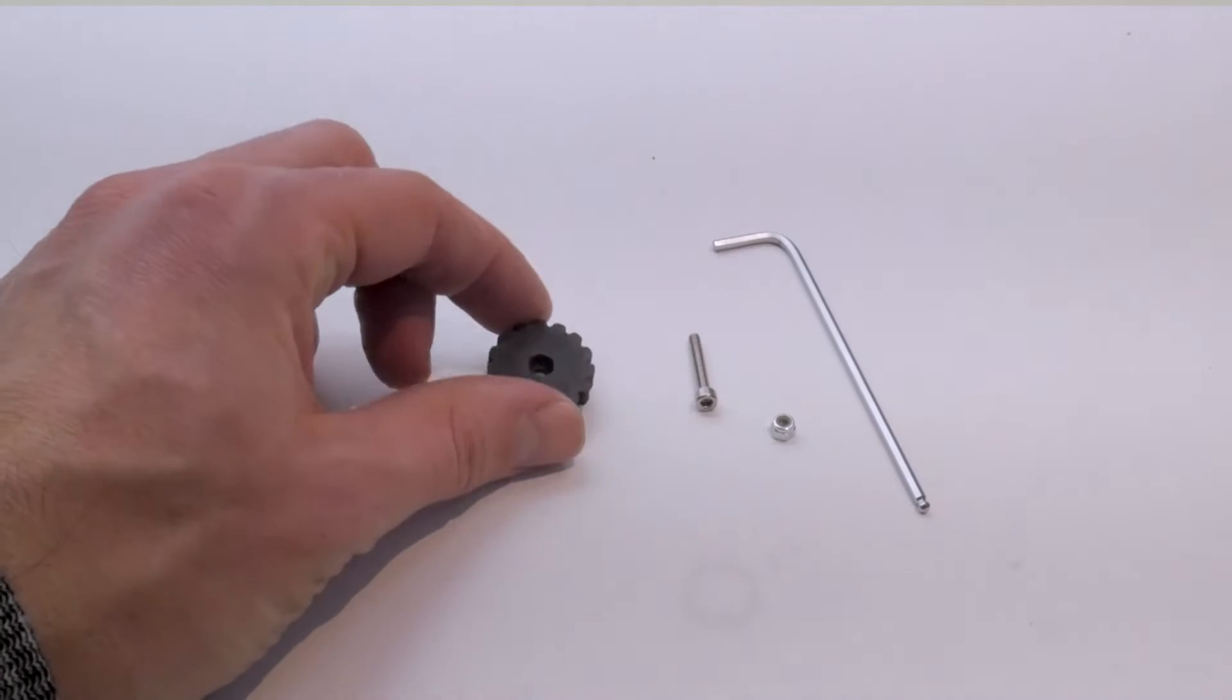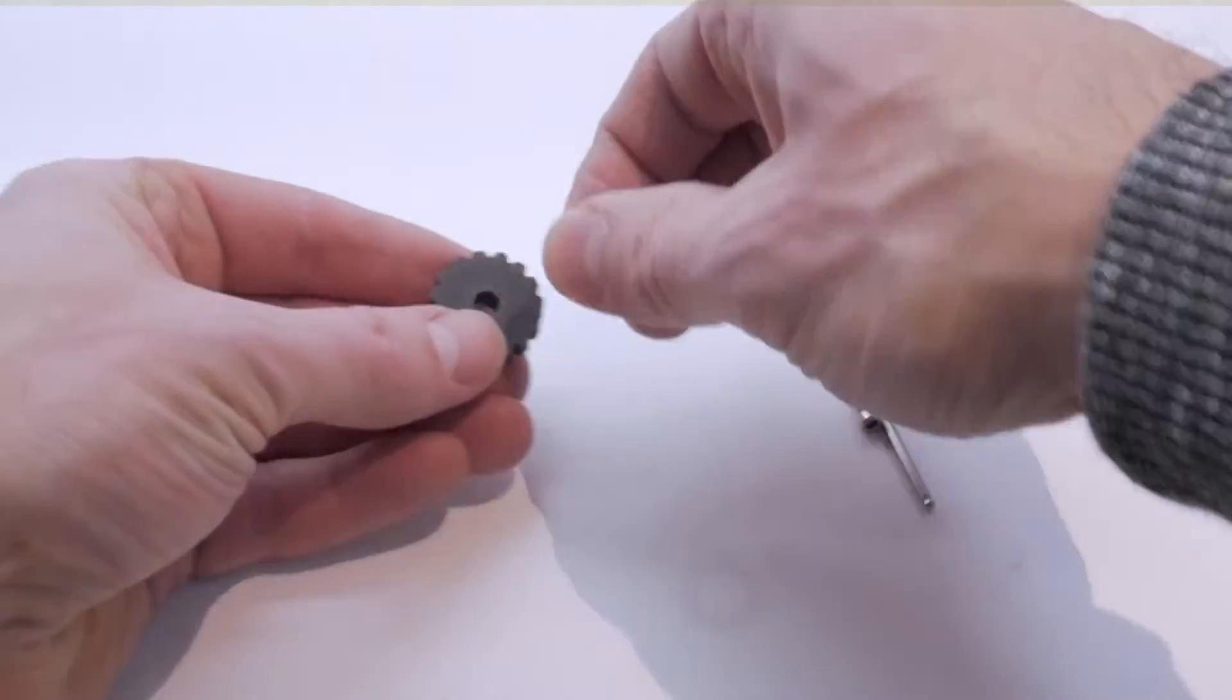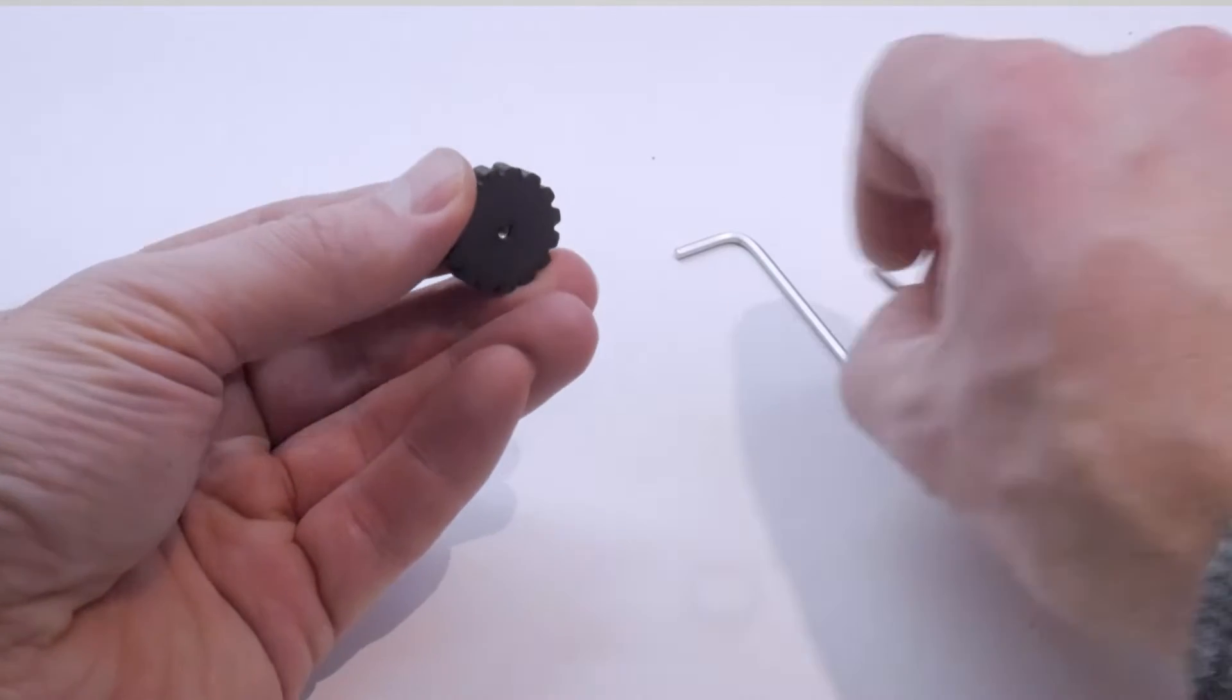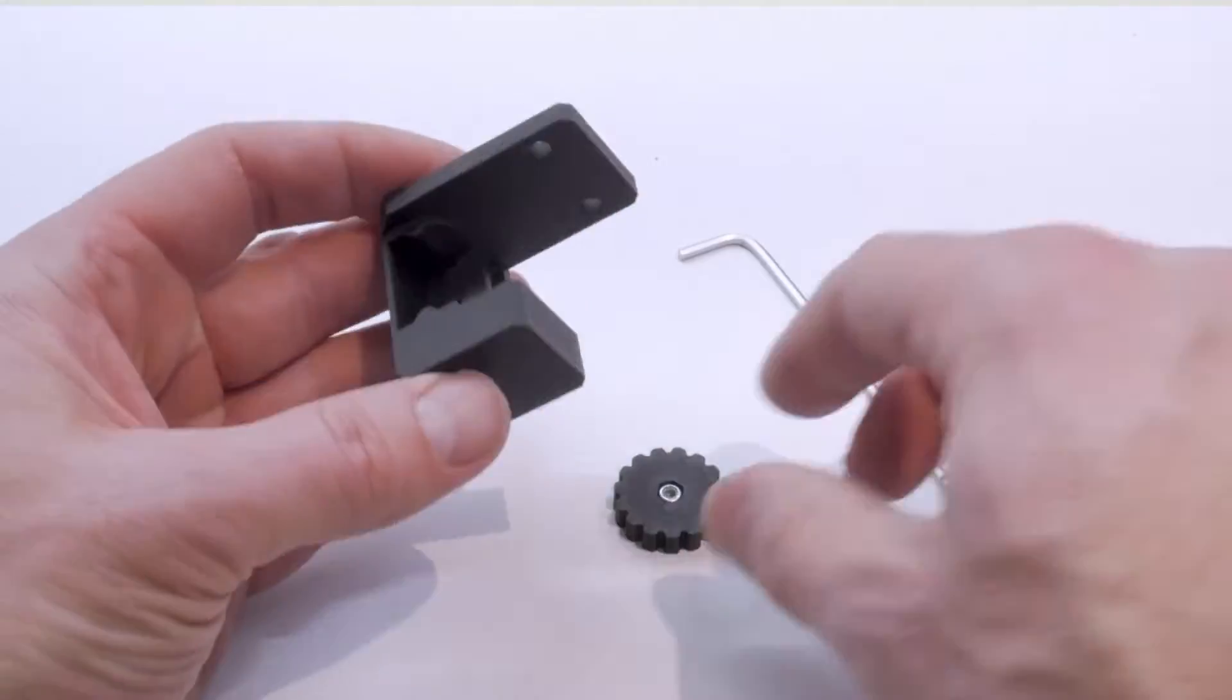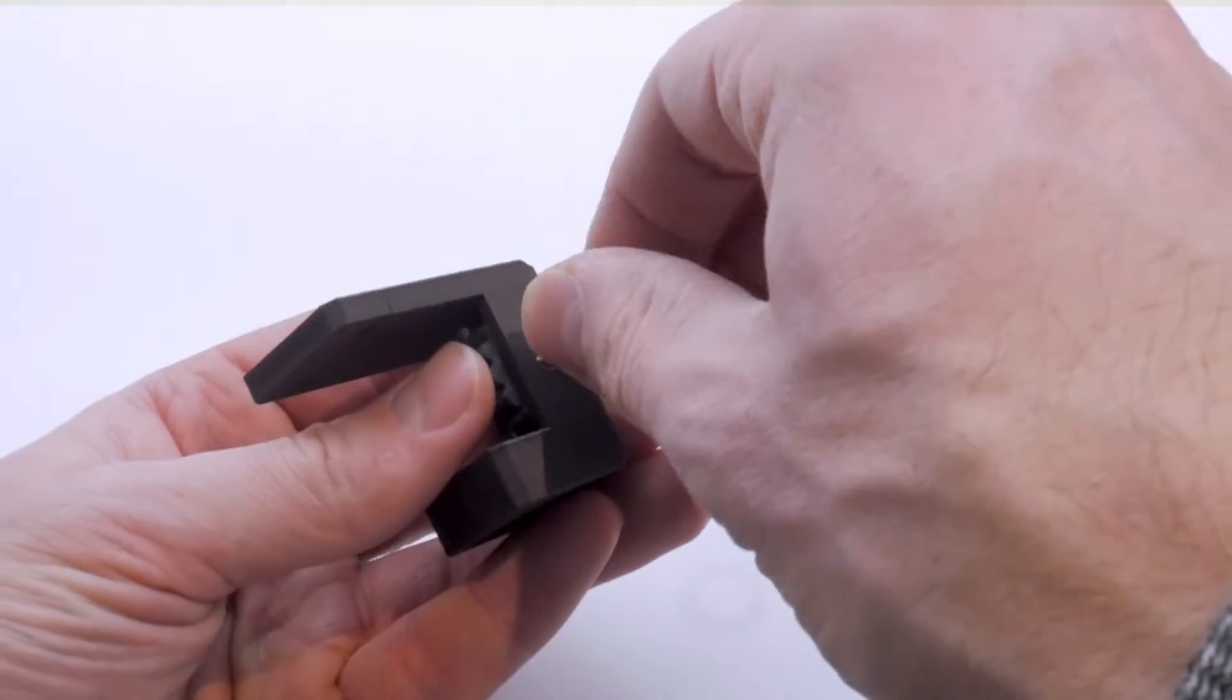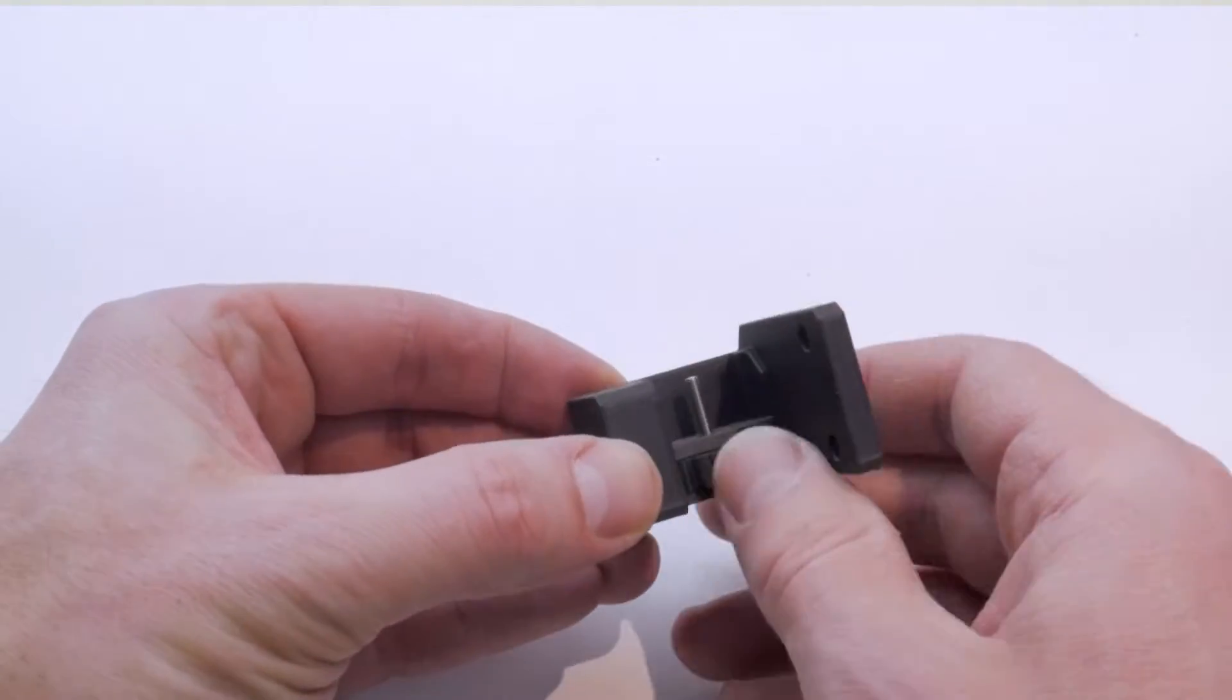Now we can look at the thumb screw and body assembly. You'll need an M3 by 20 socket head cap screw and an M3 locking nut. The locking nut goes into the thumb screw recess. Take your M3 by 20 socket head cap screw and the large body piece, insert the thumb screw into that slot, then insert the screw through the bottom and thread it all the way in until the head completely bottoms out. Now that thumb screw should be retained inside the body.